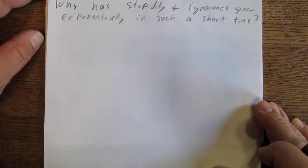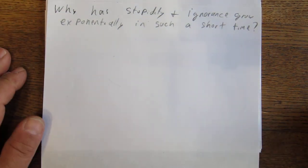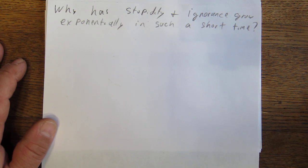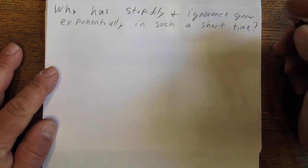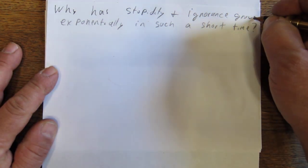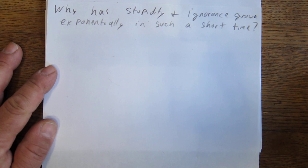Hi, my name is Michael Dottie G and have another video for you today. And in this video, it's why has stupidity and ignorance grown exponentially in such a short time.